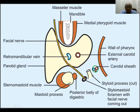In another view: this is the mandible, this is the medial pterygoid, this is the masseter, and this is the parotid gland. This is the deeper lobe and this is the superficial lobe. This is the retromandibular vein, this is the facial nerve pores, and this is the external carotid artery.